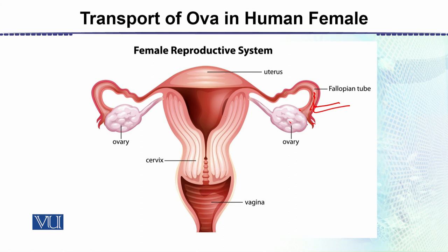This area can also be called the infundibulum region where fertilization takes place. The fertilized egg then moves from here into the uterus. The uterus is in a condition where the endometrium has been shed and is beginning to form again. The zygote or fertilized egg, which has developed considerably, embeds into the uterine wall — and this embedding marks the start of pregnancy. This is all about the transport of ova in human female.